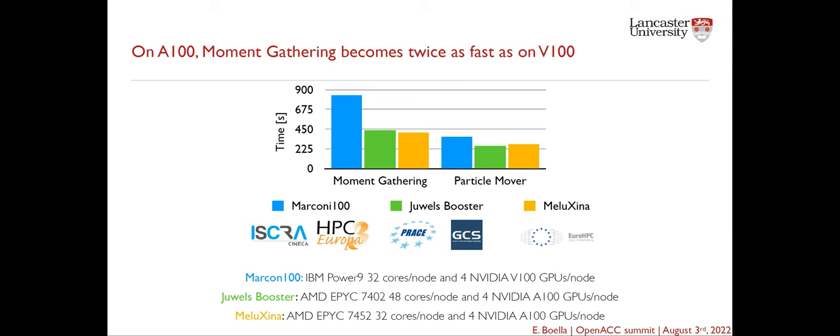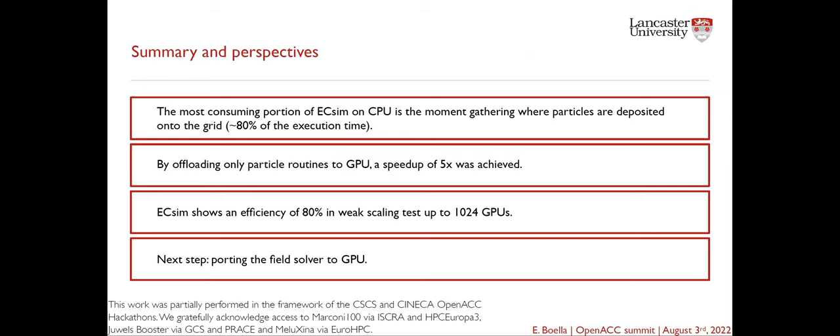In conclusion, the most time-consuming portion of AXIM on CPU is the moment gathering, where particles are deposited onto the grid, taking about 80% of the solution time. By offloading only the particle routines to GPUs — the moment gathering and the particle mover — we achieve a 5x speedup, and the moment gathering becomes comparable in time with other code blocks. AXIM achieves 80% efficiency in weak scaling tests up to 1,024 GPUs. As a next step, we would like to port the field solver to GPUs as well.